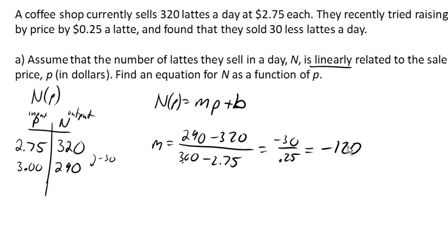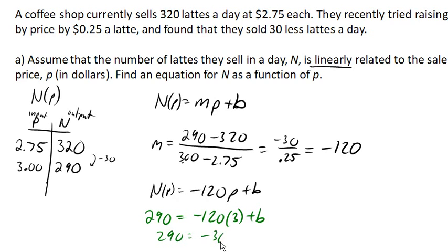Now we have N of p equals negative 120p plus b, and now we need to find our intercept. To do that, we're going to take one of these points and plug it in for N and P. I'm going to use this one because the 3 is such a pretty number. So 290 equals negative 120 times 3 plus b. So 290 is negative 360 plus b, and that tells me that b is 650.